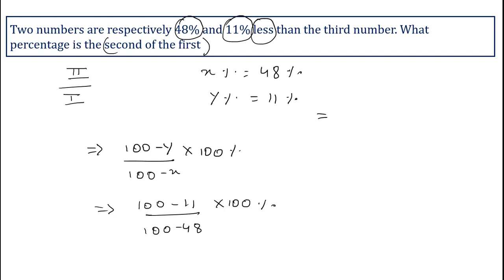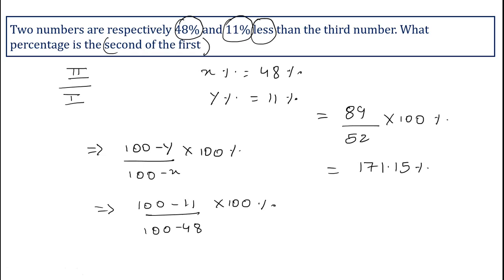Solving: 100 minus 11 is 89, upon 100 minus 48 is 52, into 100 percent gives the answer as 171.15 percent. So 171.15 percent is the second of the first.